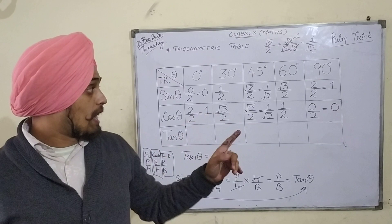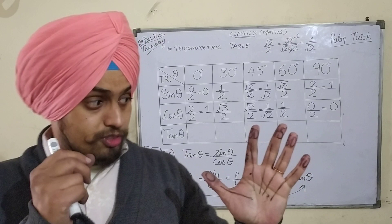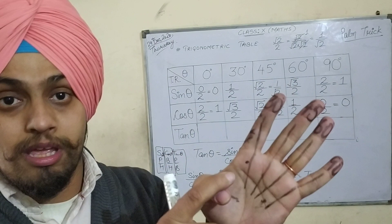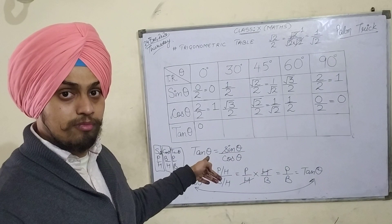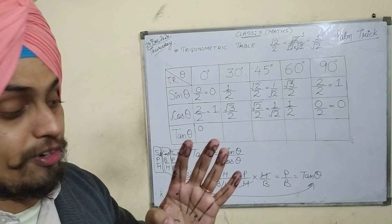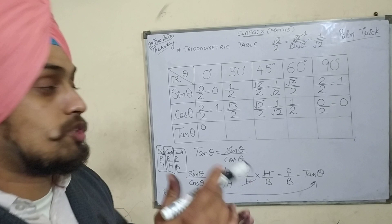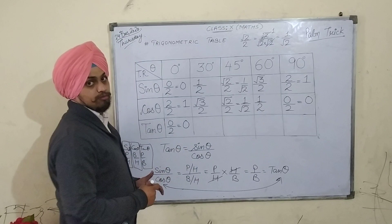Let's start with tan 0 degree. Bend the finger on which 0 is written. For the numerator (sin theta) see to the left — 0 fingers, take square root of 0. For the denominator (cos theta) see to the right — 4 fingers, take square root of 4 which is 2. So tan 0 degree equals 0 divided by 2, which equals 0.